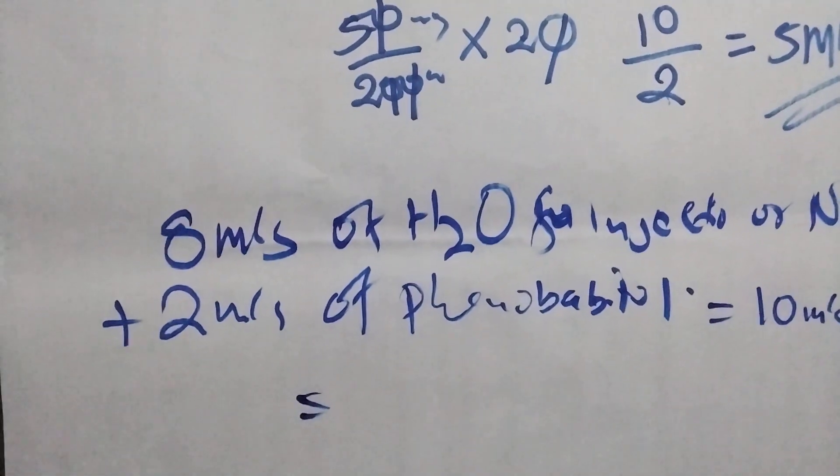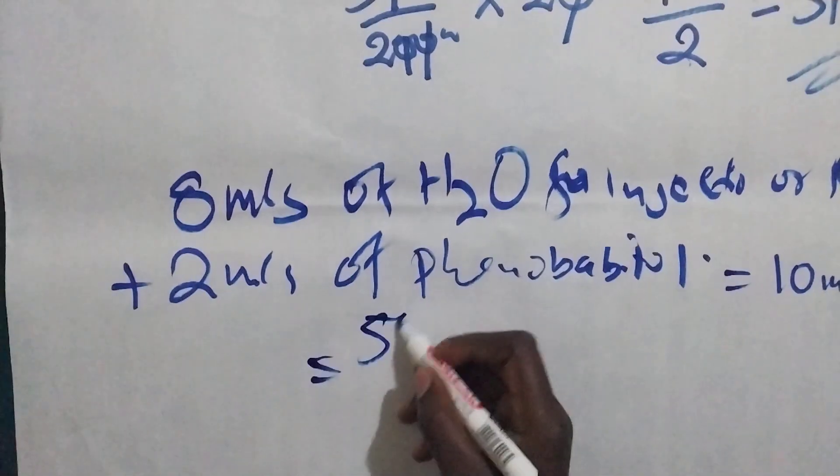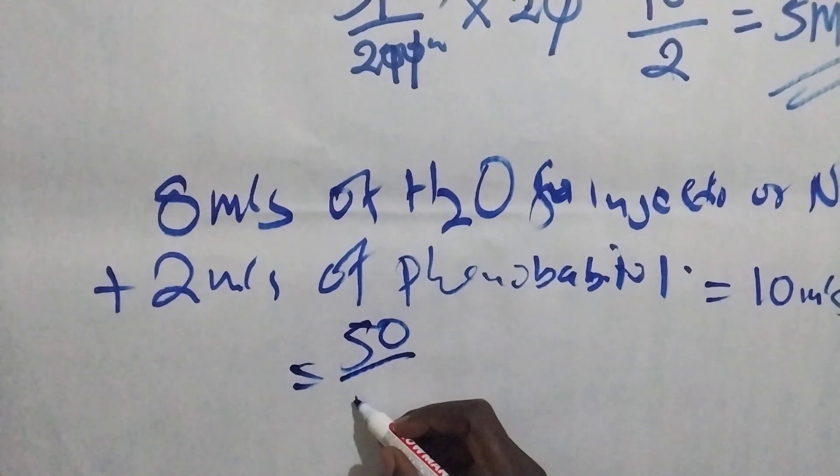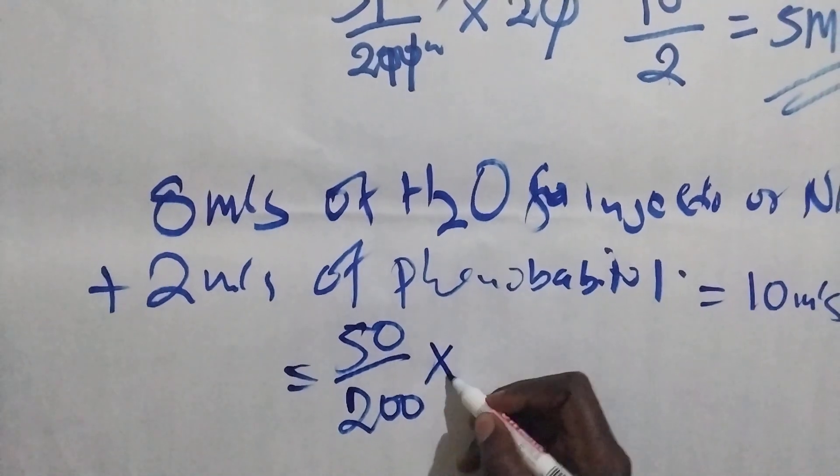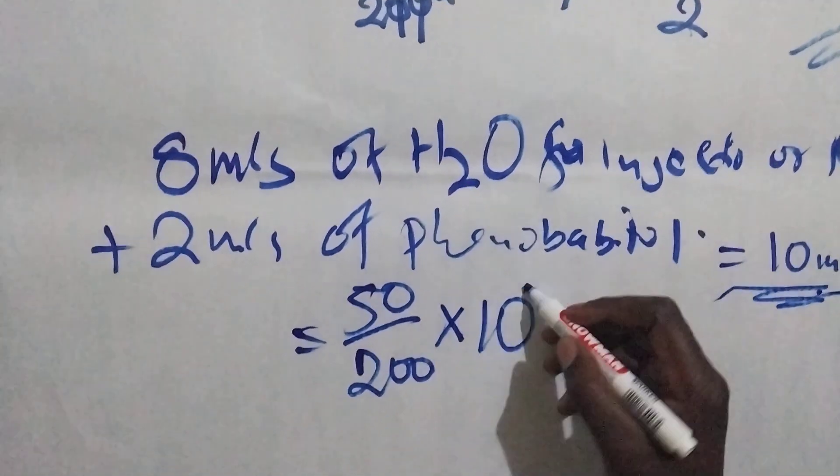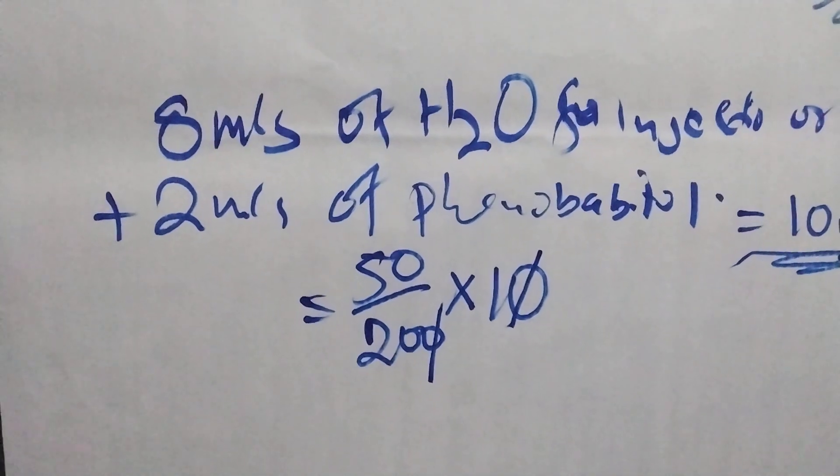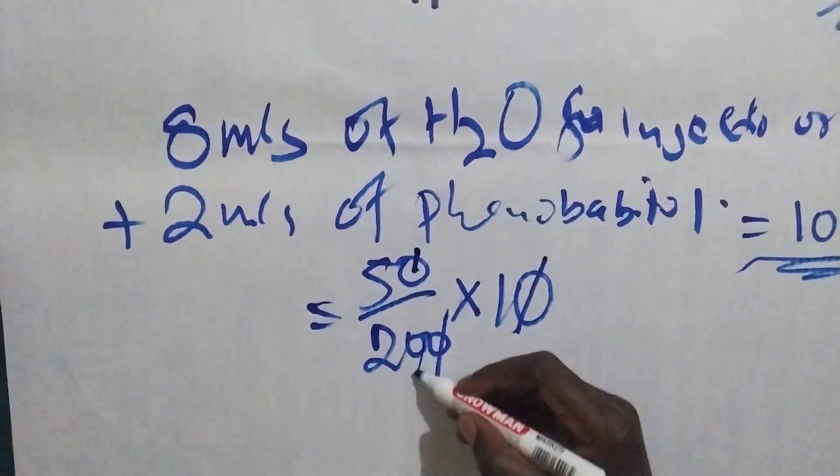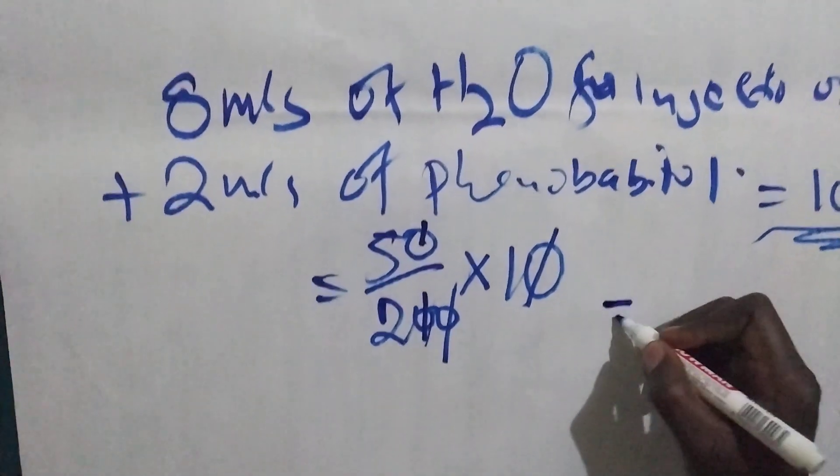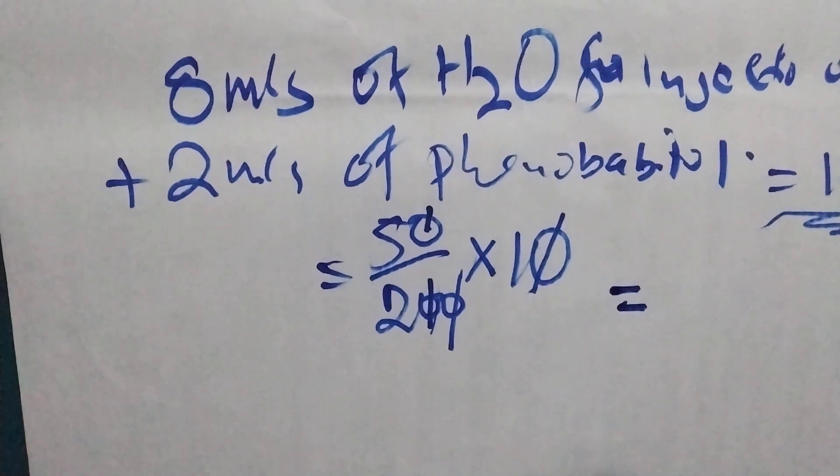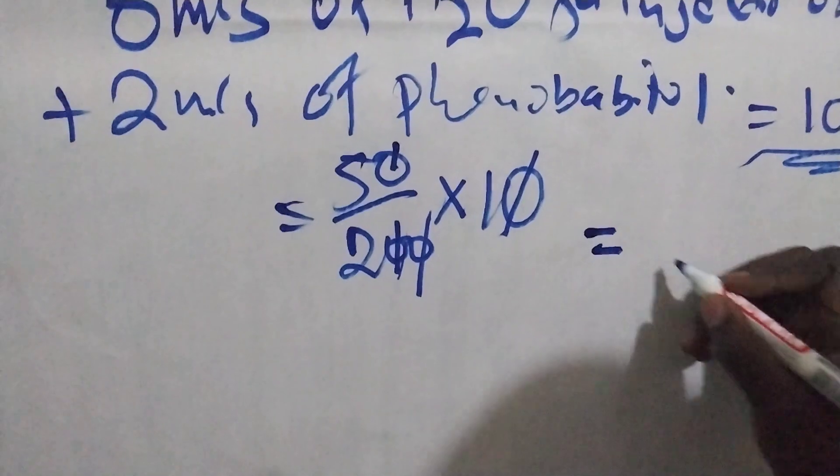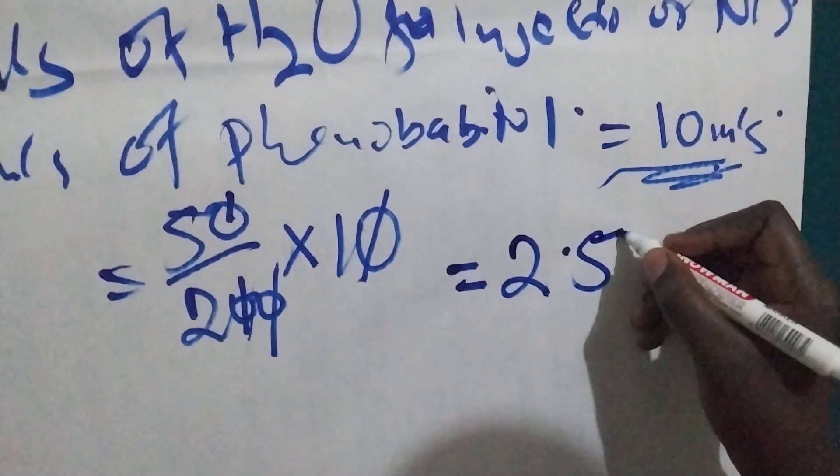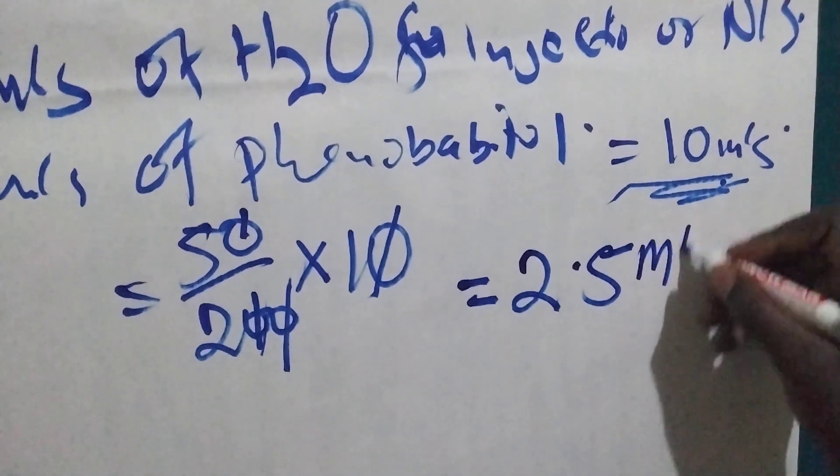What we are going to do, we are going to put 50 divided by 200 times 10. Our dilution is 10. Our mls, the one we are going to aspirate and give to this baby is 2.5 mls.